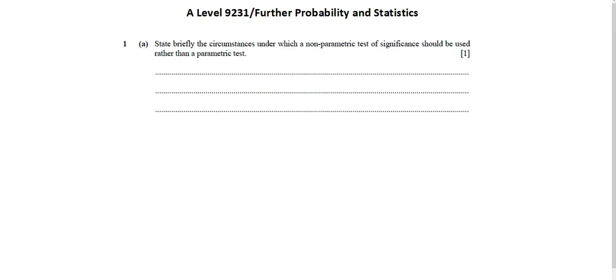Requirement A: state briefly the circumstances under which a non-parametric test of significance should be used, rather than a parametric test. Here I've posted two options: Underlying Distribution Unknown or Normal Distribution of Population Cannot Be Assumed. Either of these is correct for Requirement A.